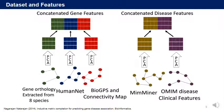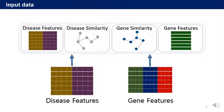We create the final gene feature by concatenating the pre-processed data. Two data sources were used to create disease features: MIM Miner and OMIM disease clinical features. Likewise, we perform PCA and create the final disease feature. We can create a similarity matrix using the covariance matrix of the feature data. Then all input data is ready.